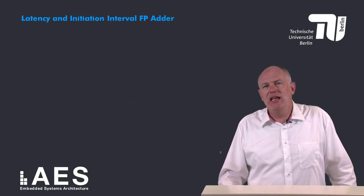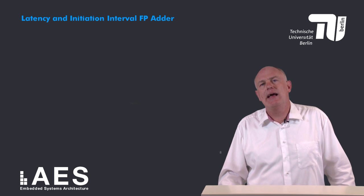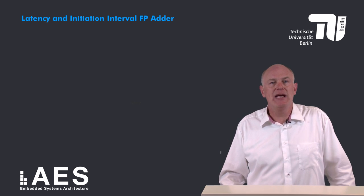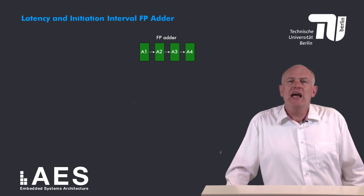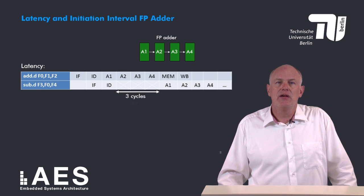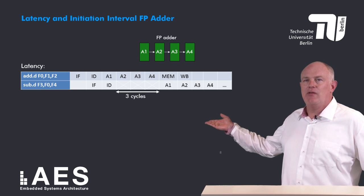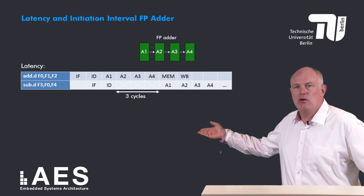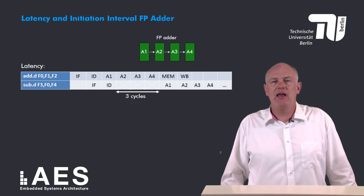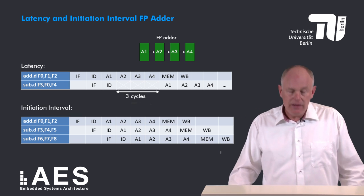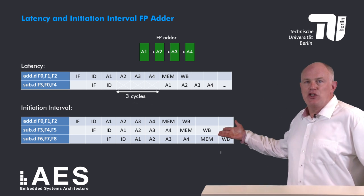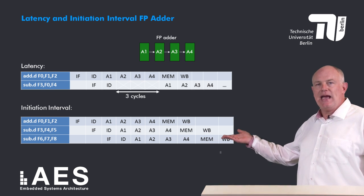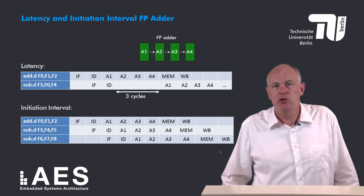Let's look in more detail at the latency and initiation interval of a floating point add. We assume a floating point add can be pipelined and requires four execution cycles corresponding to stages a1 to a4, so its latency is 3, as this figure illustrates. We have an add double that writes to register f0 and a subtract double that uses f0 — the subtract incurs three stall cycles as indicated by the cross boxes in the figure. On the other hand, its initiation interval is 1: because the floating point adder is pipelined, the next instruction can be issued to it in the next cycle.